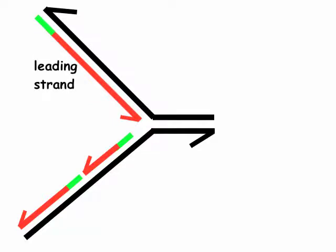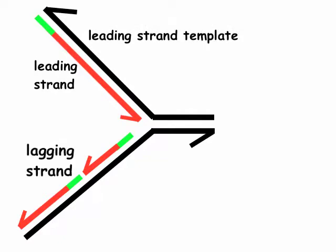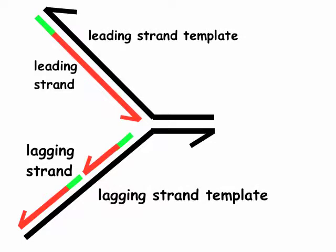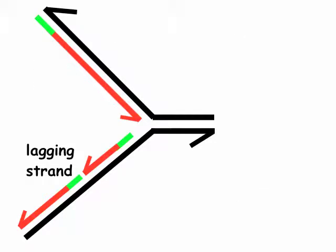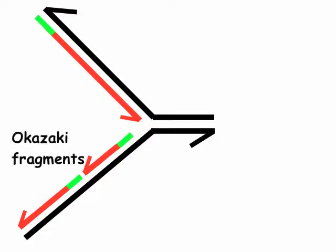The replication fork has a leading strand. That leading strand is synthesized based on complementarity to the leading strand template, and the lagging strands are complementary to the sequence of the lagging strand template. The lagging strand template gives rise to short fragments called Okazaki fragments, and resolving them is the topic of this video.